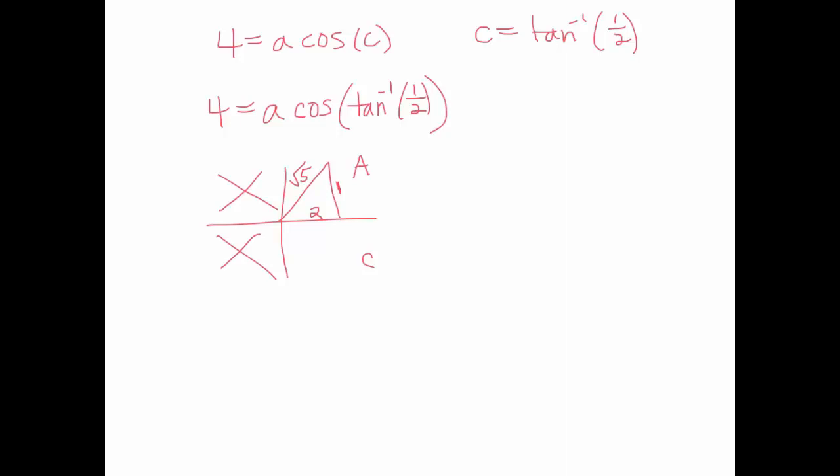So, now, we've used the tan inverse to set up our picture. Now, I'm really looking at 4 equals a times the cosine of whatever that angle is. We'll call it theta. So, what's the cosine of that angle? Cosine is adjacent over hypotenuse. And now, let's solve for a. A is going to be 4 root 5 over 2, which is really 2 root 5.